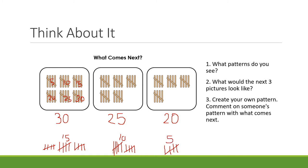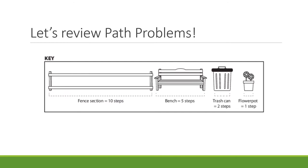Create your own pattern. You can comment on someone else's pattern with what comes next. Share your pattern with somebody around you. Let's review our path problems. Last week in lesson one, we solved multiple Hansel and Gretel path problems. While they walked, Hansel and Gretel noticed that the fences in the park were 10 steps long, the benches were 5 steps long, trash cans were 2 steps long, and flower pots were 1 step long. When they got home, they made this key so that they would remember how long each object was. Last week we solved problems where we figured out how many steps long parts of the path were based on the objects that were in the path.